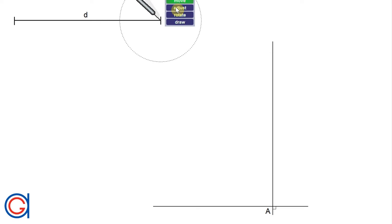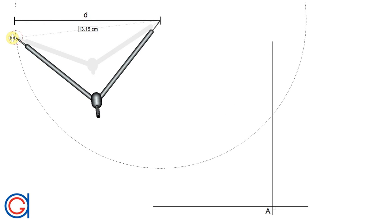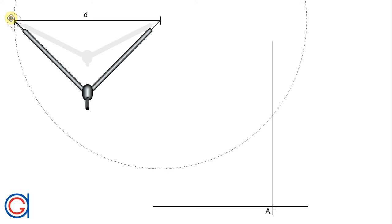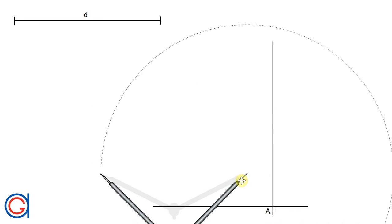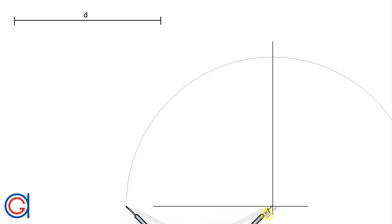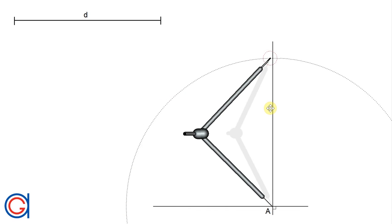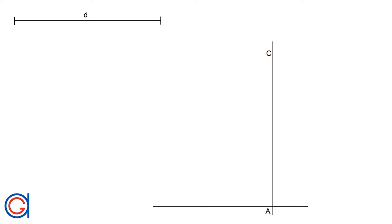Now setting our compass to the given length d and centering the compass on vertex A, we're going to describe an arc on the vertical line, obtaining the second vertex of the hexagon, which we will call vertex C.